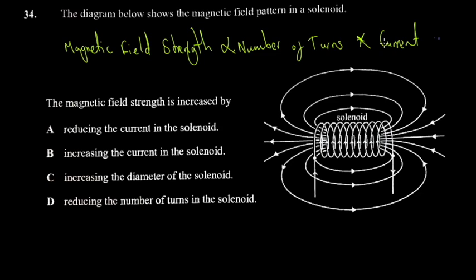So if you want to increase the magnetic field strength of this solenoid, we have to consider either of those two. We have to find anything matching these two. Increasing - reducing the number of turns of the solenoid - obviously this is not it. When you reduce, you actually reduce the magnetic field strength. Increasing the diameter of the solenoid, not necessarily. Increasing the current of the solenoid - now this is more like it.